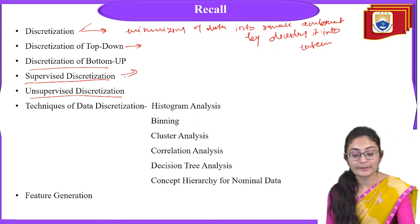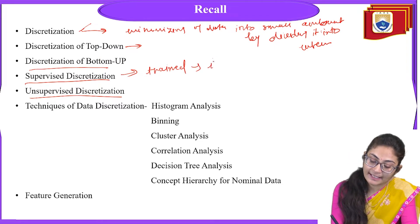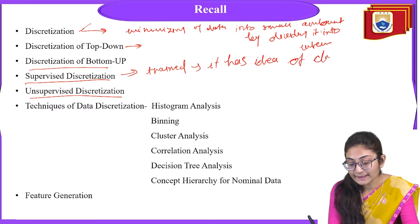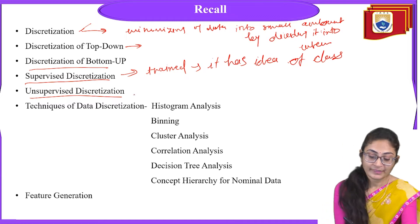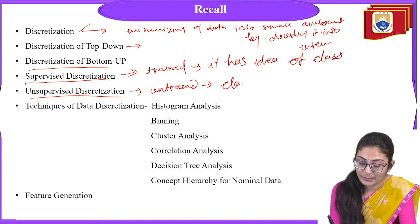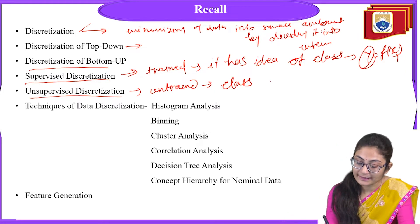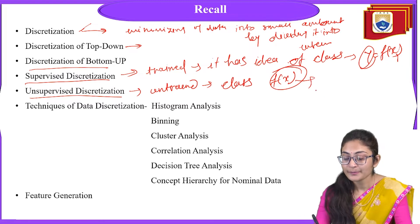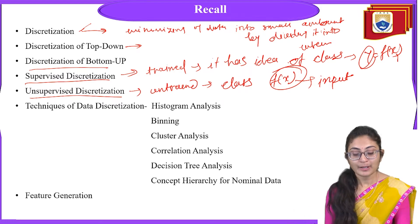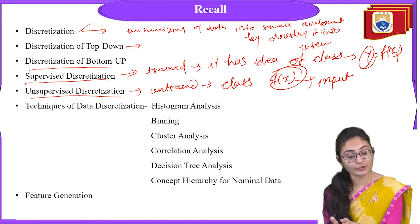In supervised discretization it contains a trained model and has the idea of classes — the idea of output. In unsupervised discretization it is an untrained model with no idea of classes, meaning y = f(x) where y is the dependent variable and x is the independent variable. In supervised discretization we have the idea of both input and output, but in unsupervised we have no idea about the output.